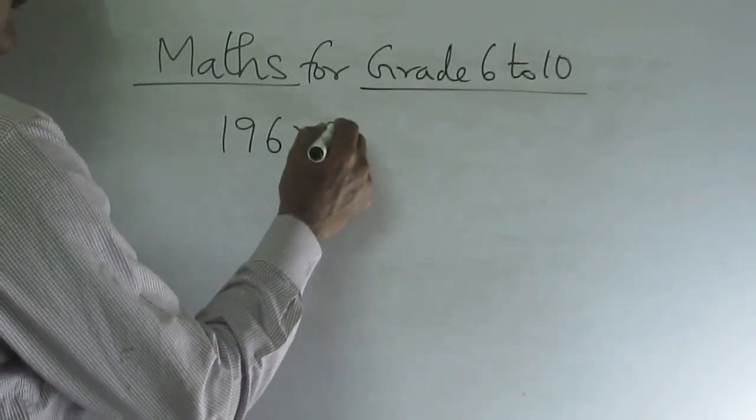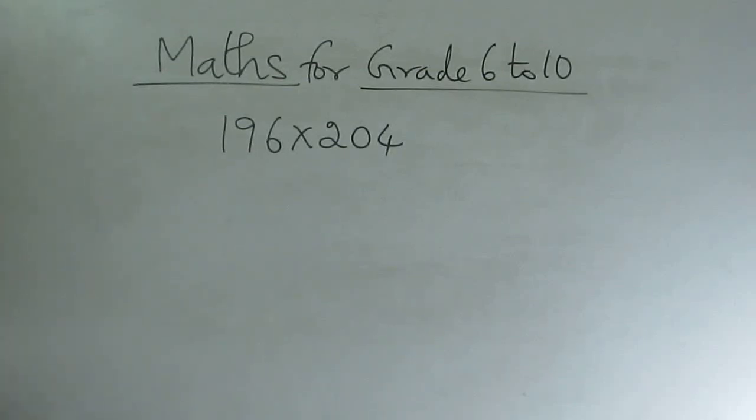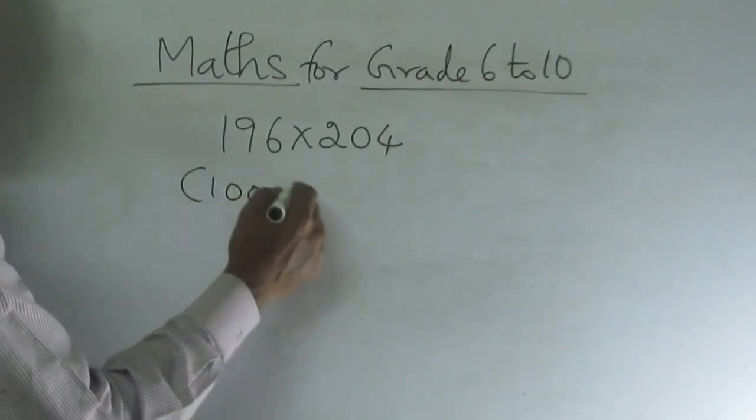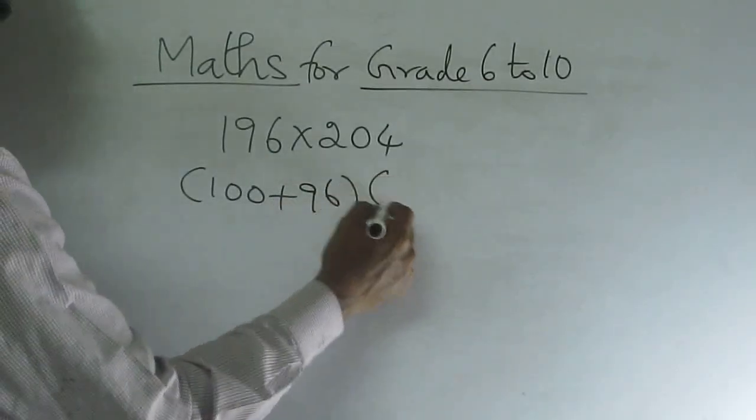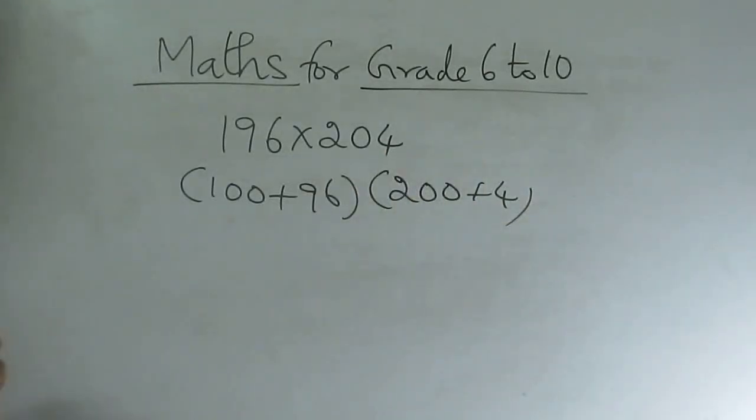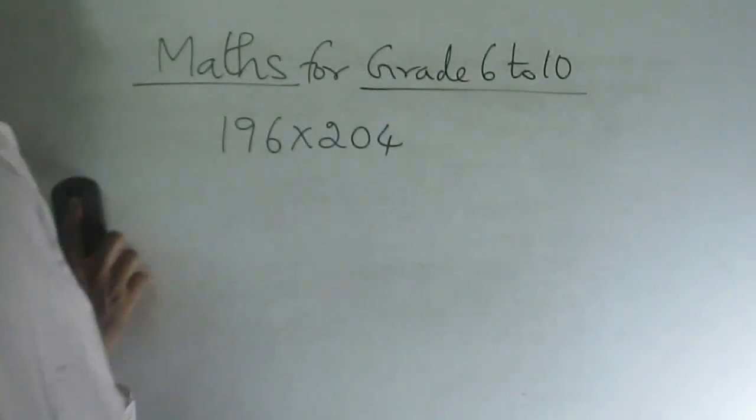196 multiplied by 204. This can be done in different methods. 196 and 204, so many steps. But some students, what they do is, they take the nearest number, this one. 100 plus 96, then multiply by 200 plus 4. Don't go for this. Why I am writing this? Because some students, they do this. Don't go for this because this is somehow a longer method.